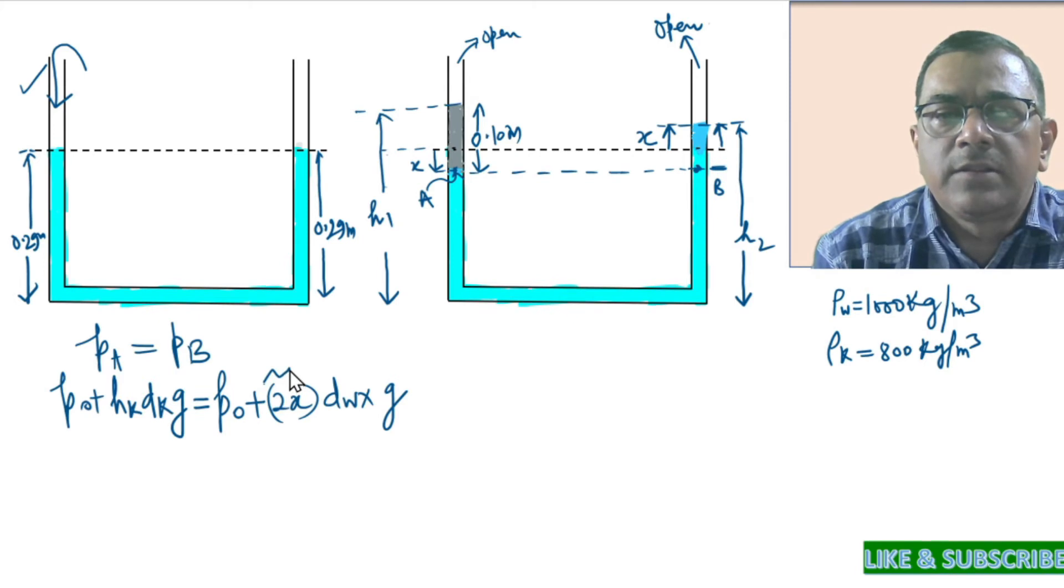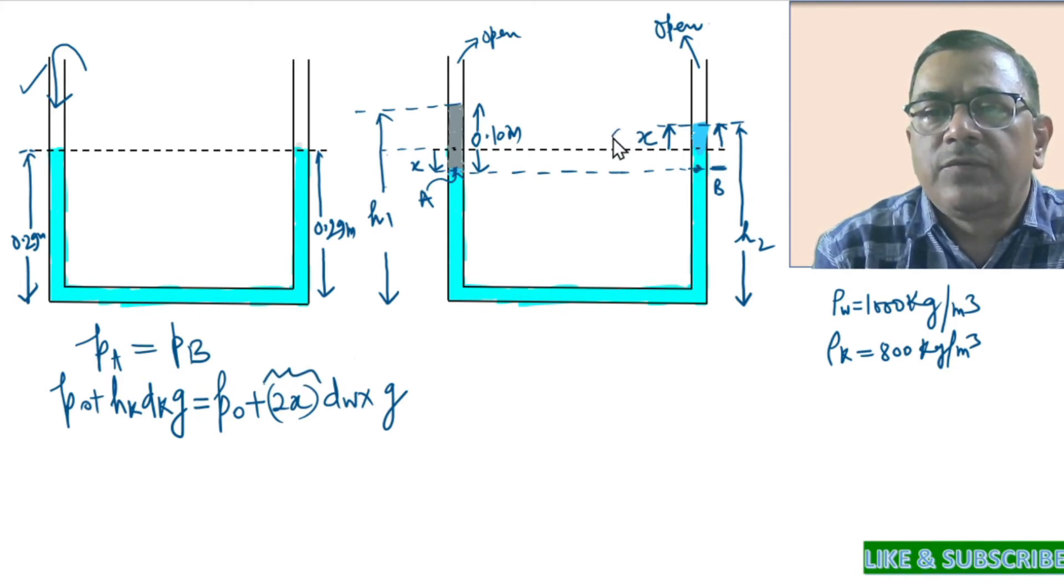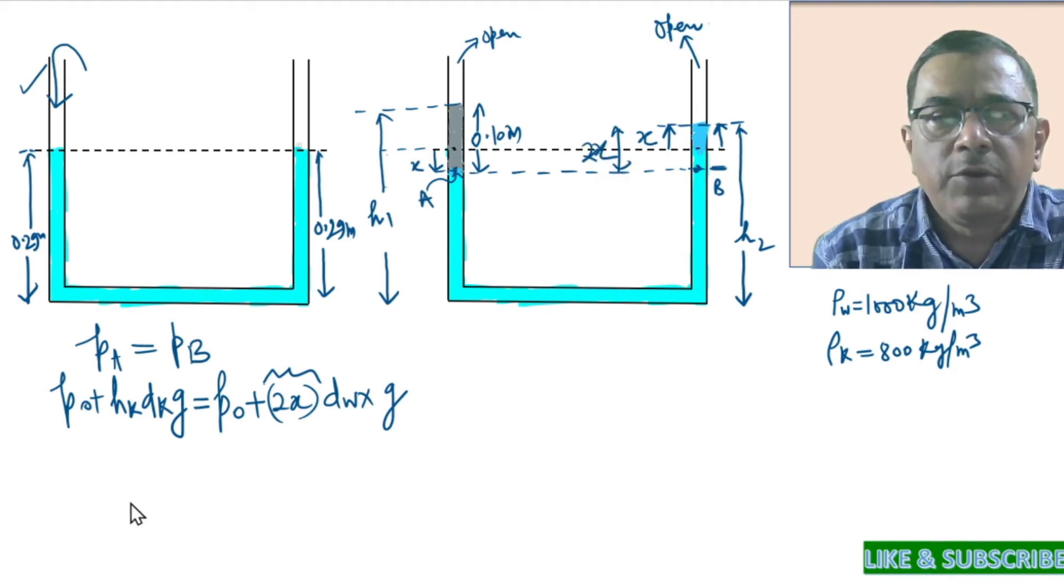Hope you understand that 2X is the height of water column above point B. So this distance is 2X. Now next,